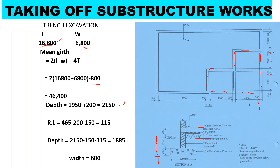We take these layers — 50mm for the marram bed, 315mm for the hardcore, and 100mm for the oversite concrete — adding to 465mm. We then subtract 200mm and subtract 150mm for the vegetable soil. What remains is 115 millimeters, and that is our reduced level.